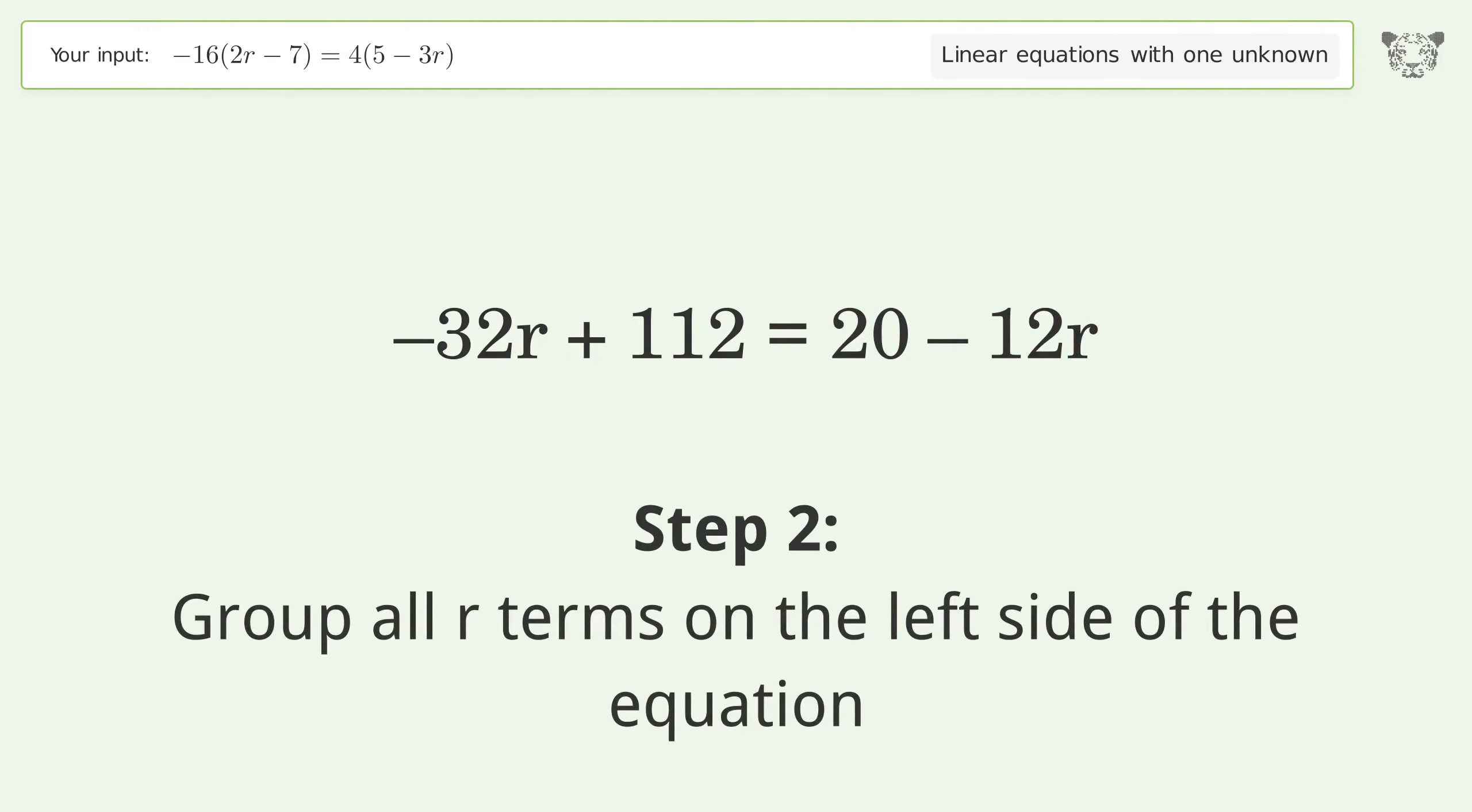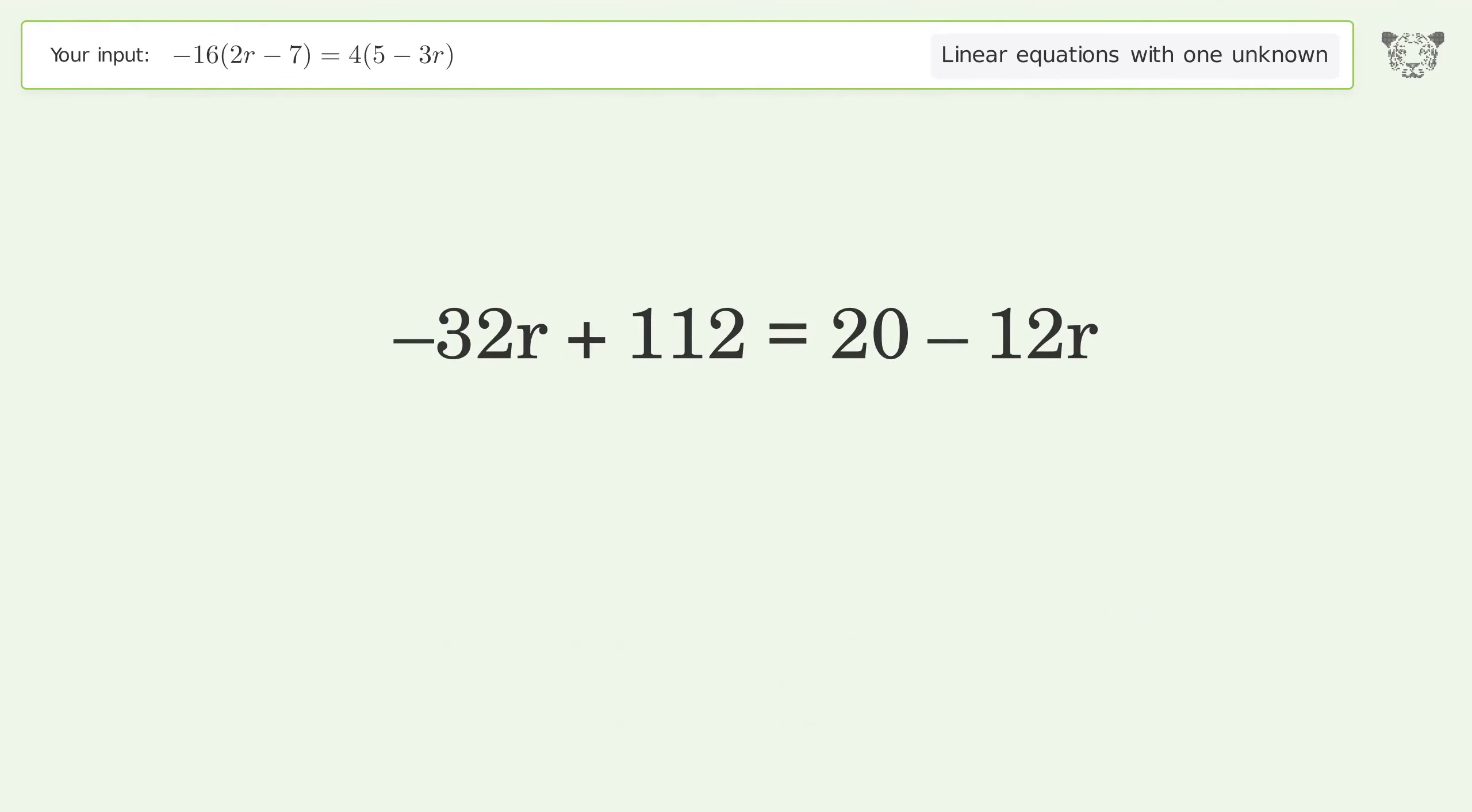Group all r terms on the left side of the equation. Add 12r to both sides. Group like terms and simplify the arithmetic.